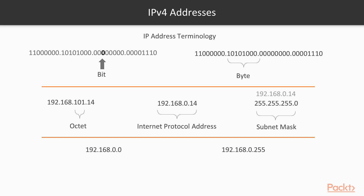You might ask yourself: why is it called a subnet mask? The subnet mask basically masks or hides the host identifier of the address and reveals only the network addresses — it's used for speed, basically. Our network address is used in the routing process to move packets to and from devices on different networks. The network address uniquely identifies a network — you can also call it a network number — and every host on a given network shares that same network address.